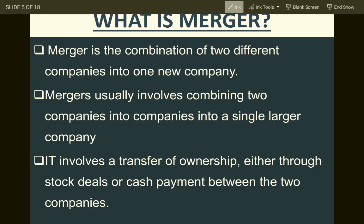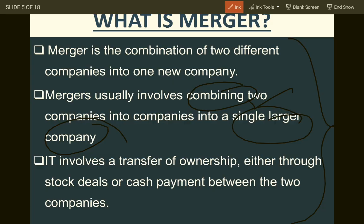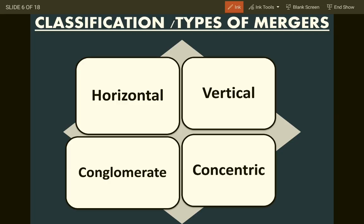A merger is a combination of two different companies combined together. Mergers are generally more friendly — not like a takeover or hostile acquisition. A merger usually involves combining two companies to form a single larger company. When two companies merge, there is a high increase in market share and profitability. It involves a transfer of ownership either through a stock deal or cash payment.